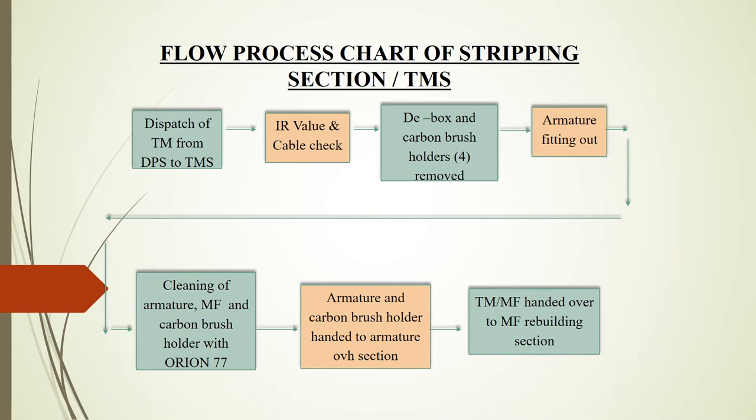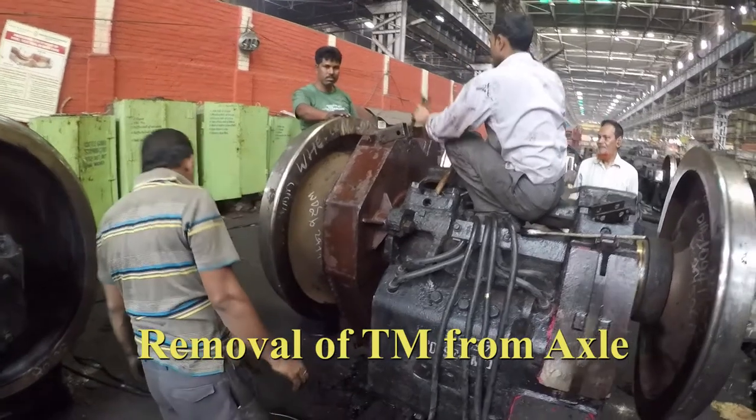On the C-side, the order is: gear, bearing, inner race, sleeve, and inner bearing cap. The cleaning of armature, magnet frame, and carbon brushes is done with Orion 77. The armature and carbon brush holders are then handed over to the armature overhauling section, and the magnet frame is handed over to the magnet frame rebuilding section.